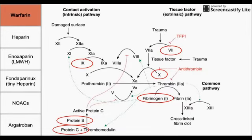If we look at the coagulation cascade here, the circled factors are the ones that are inhibited by warfarin. The circled factors are also the ones that are vitamin K dependent, meaning that if you don't have sufficient intake of vitamin K in your diet, or if it's not properly synthesized by your gut bacteria, you will have these deficiencies in the coagulation cascade. The ones circled in red are affected by warfarin.